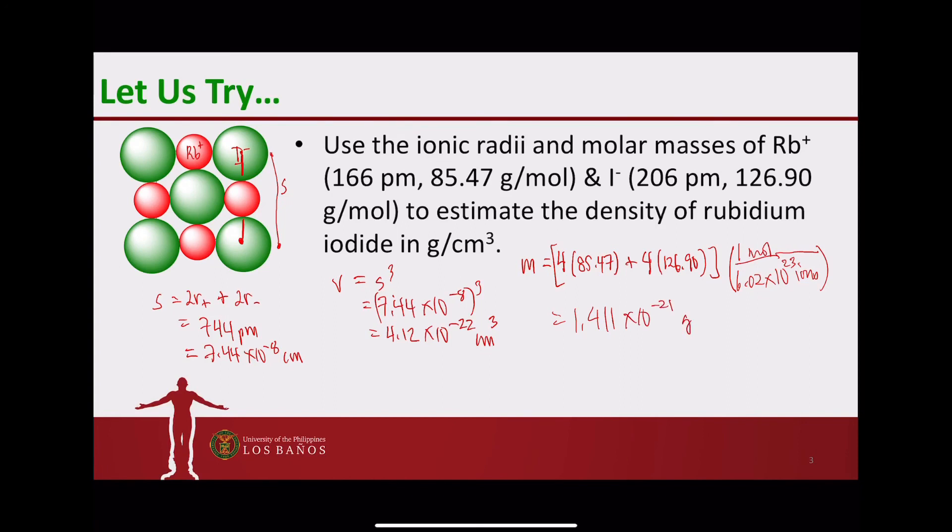So for the density, which is simply mass divided by volume, divide 1.411 times 10 to the minus 21 grams with 4.12 times 10 to the minus 22 cubic centimeter. And you will have a value of 3.43 grams per cubic centimeter for the density.